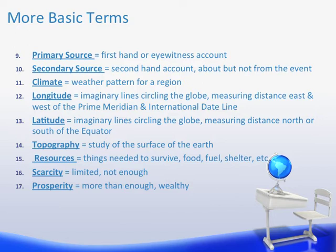Latitude is also imaginary lines circling the globe, but they measure distance north or south of the equator, and that's what helps us determine what the climate for a region might be. The farther north or south you go, the colder it is. The closer you get to the equator, the warmer it is. Topography is the study of the surface of the earth — is it mountainous? Is it deserts or plains? Are there rivers or canyons? What is the land like? That is topography. Think of it as the top of the earth.